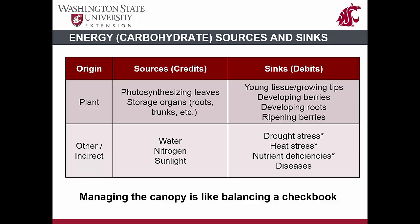Over the course of a season, some parts of the vine may start as a sink and then become a source, or start as a source and then become a sink. Shoots, for example, start the season off entirely as a sink, drawing on overwintered reserves from the vine's storage organs before the shoot and leaves are old enough to provide sufficient energy from photosynthesis. Once shoots become a sufficient size with numerous leaves, the shoot as a whole becomes a source of energy.